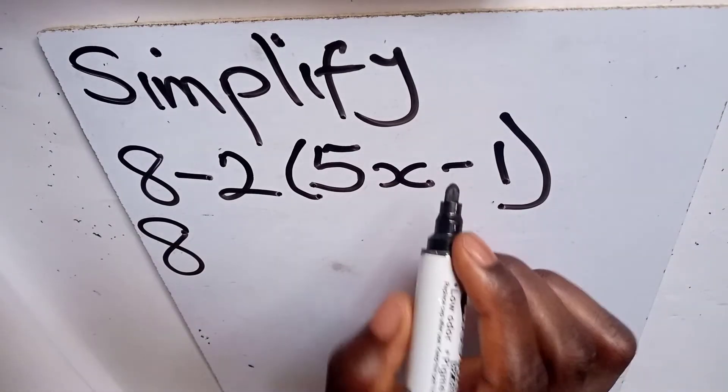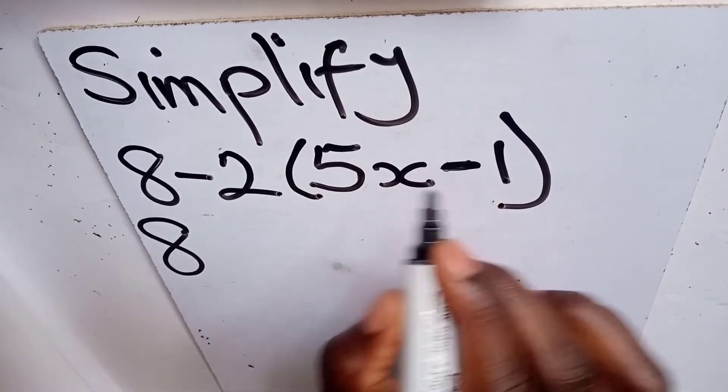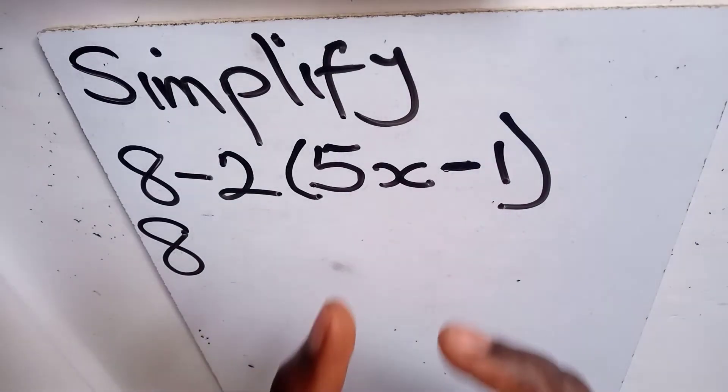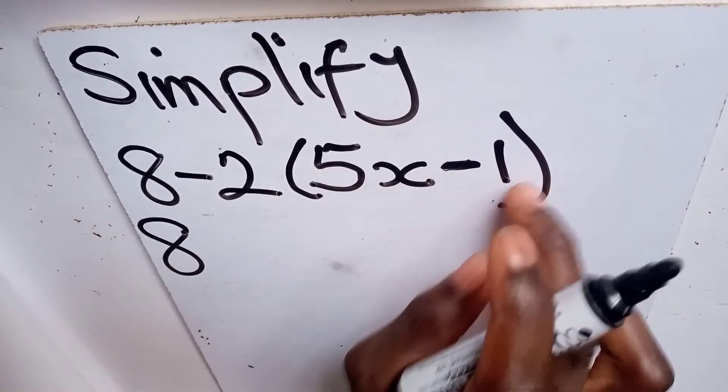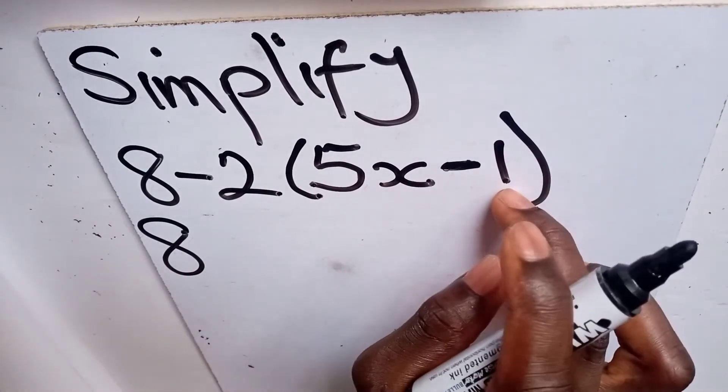So the subtraction sign here has separated these two numbers, giving us two terms. So we are going to multiply this negative 2 by each term, which is 5x and then negative 1.